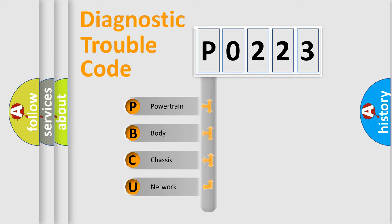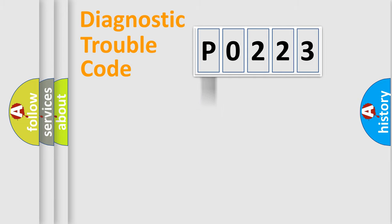We divide the electric system of automobiles into four basic units: Powertrain, Body, Chassis, and Network.